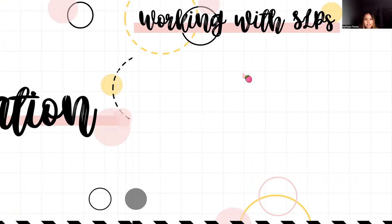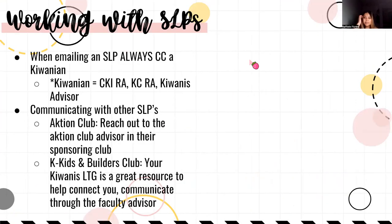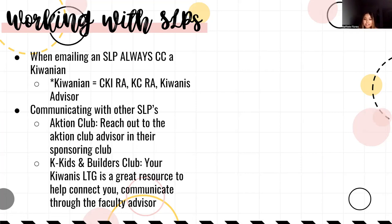When working with SLPs, the number one rule when contacting an SLP: always CC a Kiwanian. You shouldn't be contacting them without CCing an advisor or Kiwanian — this could be the Circle K region advisor, Key Club region advisor, or Kiwanis advisor. For Action Club, reach out to their Action Club advisor with their sponsoring club. For K-Kids and Builders Club, contact their Kiwanis LTG. The faculty advisor is also a great resource to help connect and communicate.